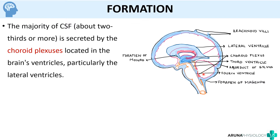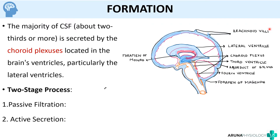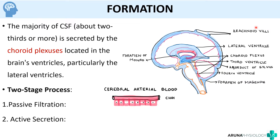The formation of CSF is basically a two-stage process. The choroid plexus acts like a sieve to filter out the blood. It is a cauliflower-like modification of the blood vessel. When blood flows through the cerebral arteries, it first gets passively filtered out, and then these cells will actively secrete some ions to form the CSF.